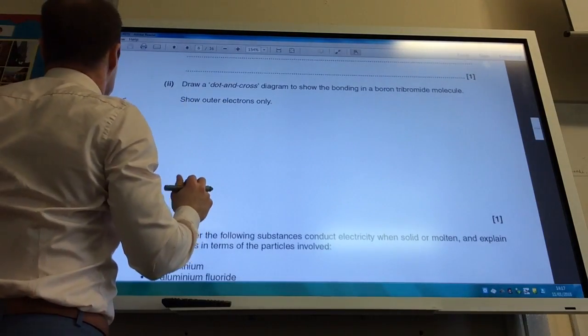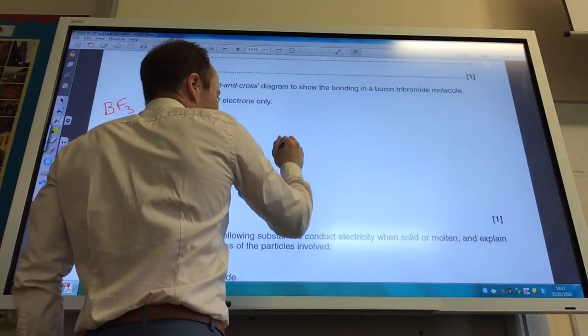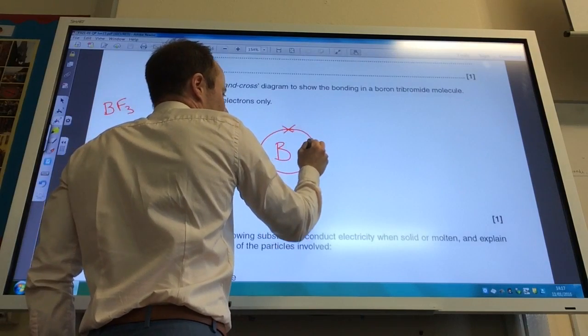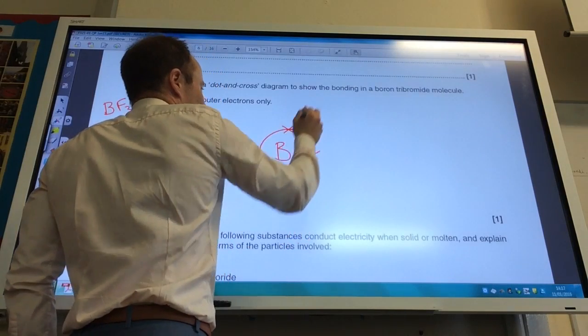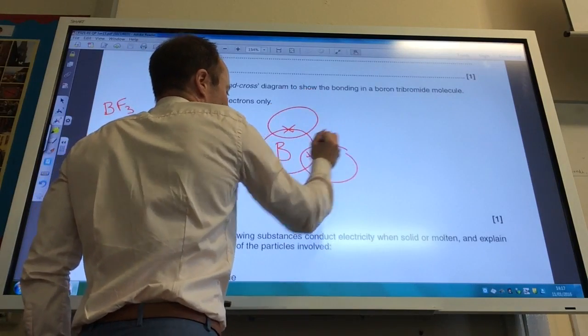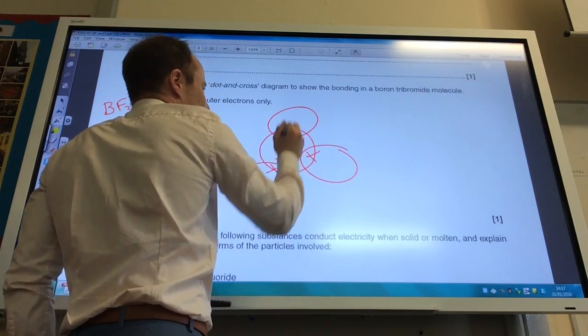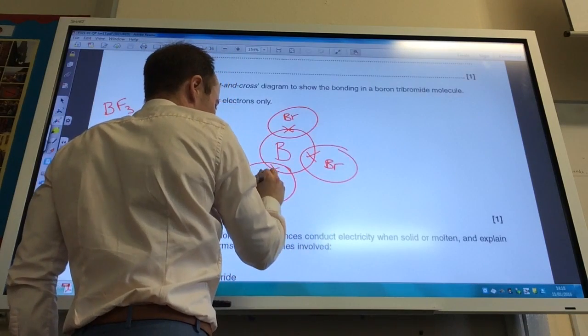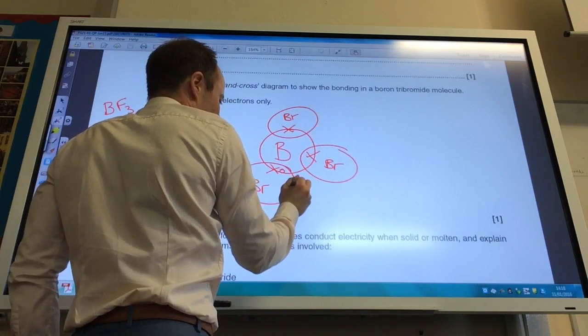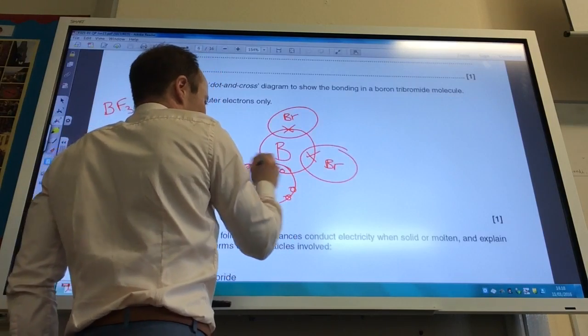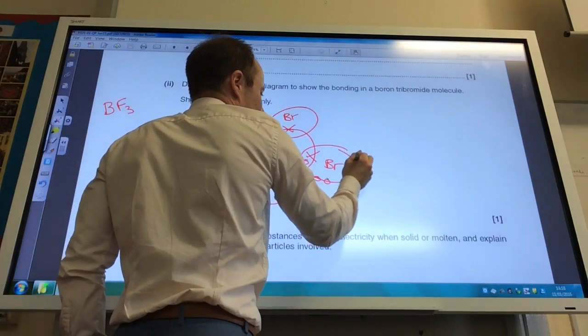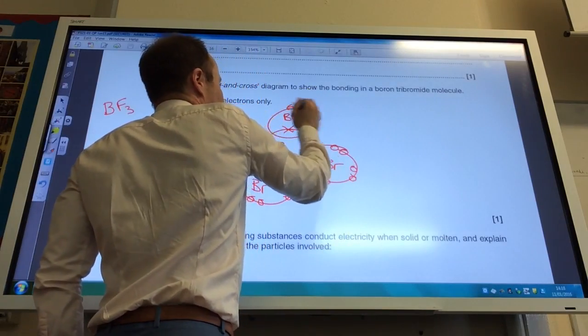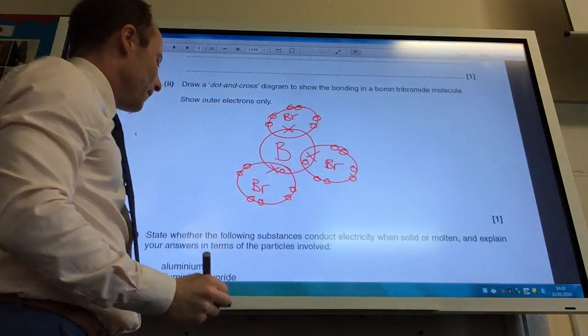What is meant by a term covalent bond? You obviously know that's a shared pair of electrons. Draw a dot and cross diagram. Boron is in group three, so it has three outer shell electrons. Bromine is in group seven, so it will have seven electrons. Don't forget to add your seven electrons around your bromine.